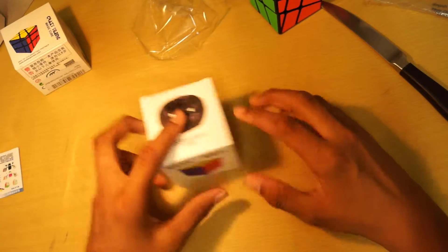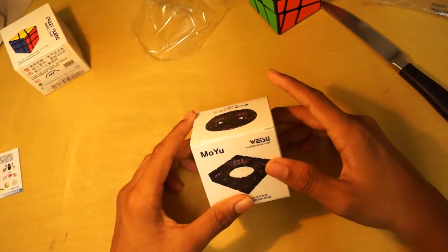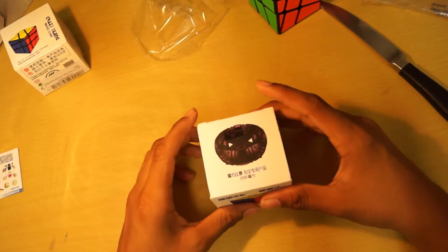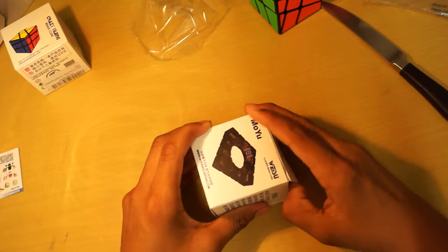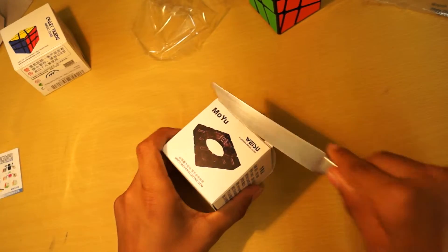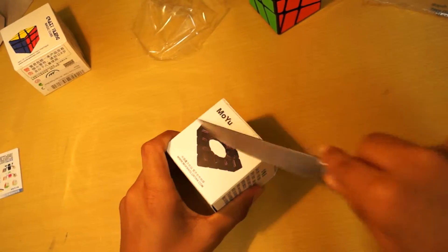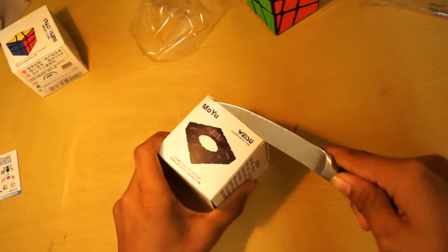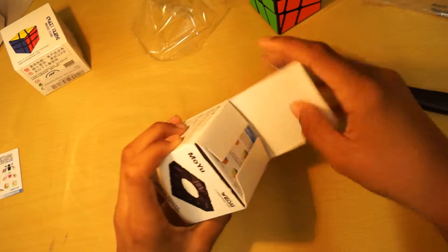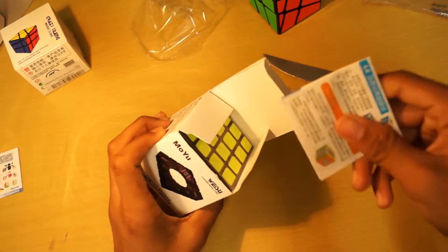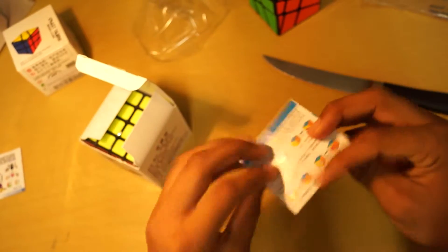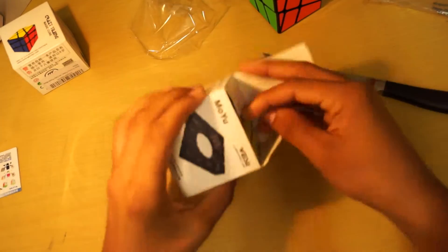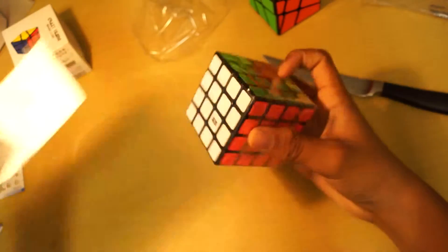Let's get on with the Moyu Weiisu. I actually had an Aosu already, but I didn't like it because I felt the turning was kind of clicky. And I also didn't like the stickers, how they were so big. I wanted smaller stickers. And the Weiisu has that. So I'm excited to unbox this. They got pamphlets. It's useless stuff. Let's go on the cube.